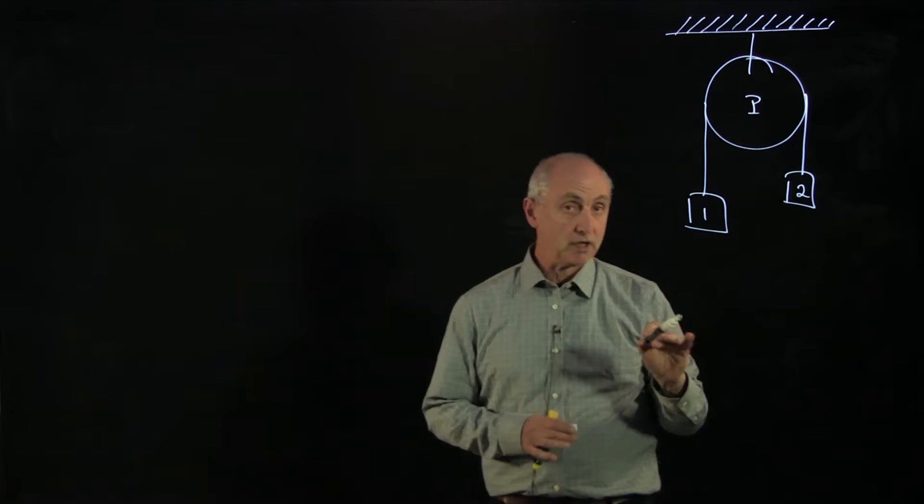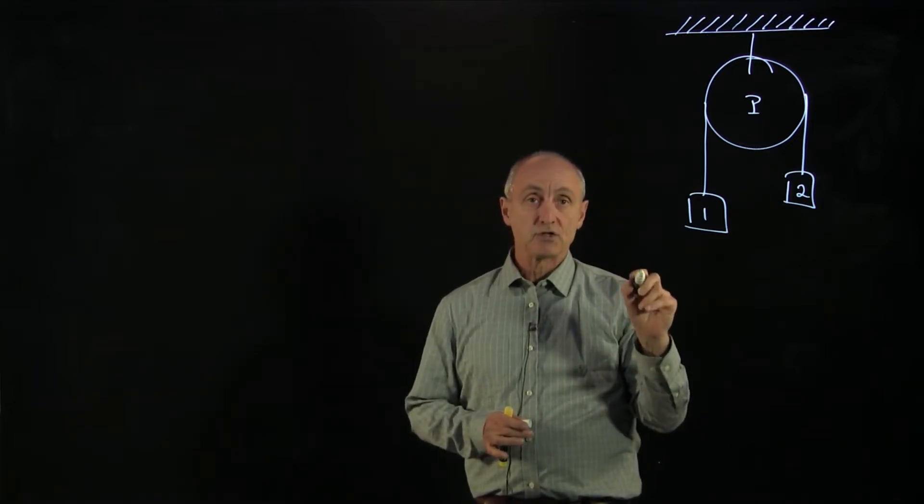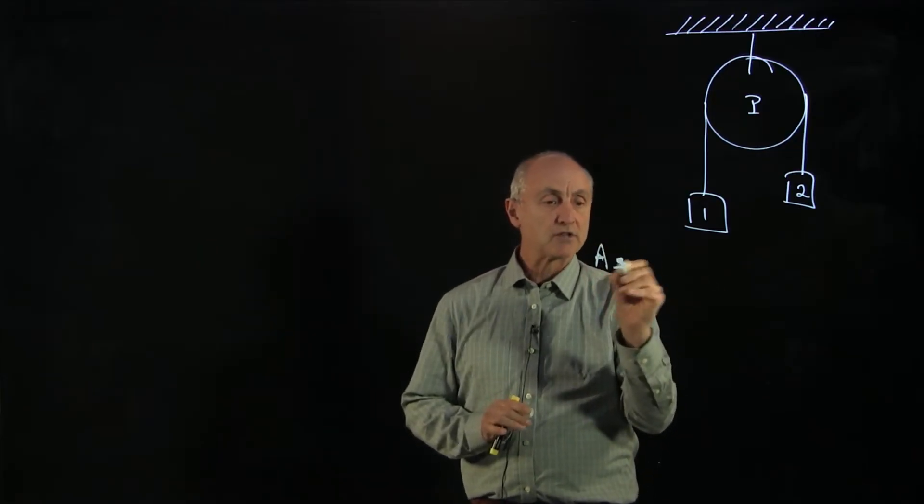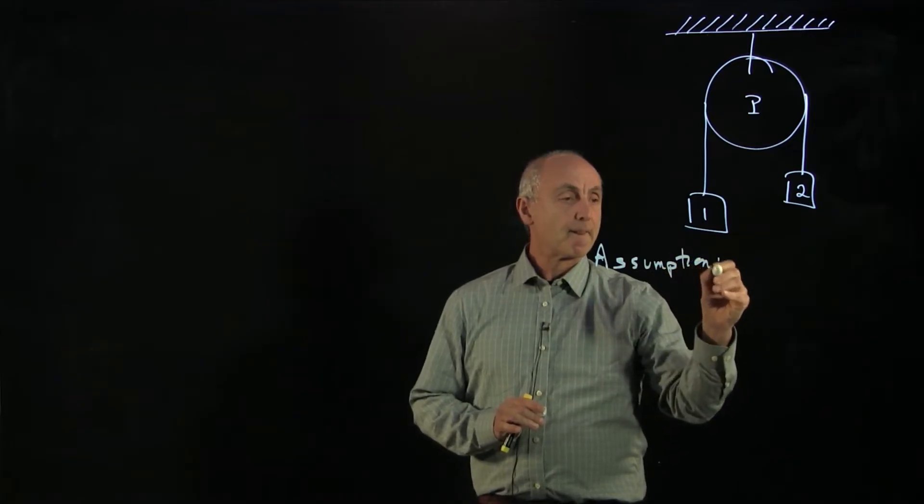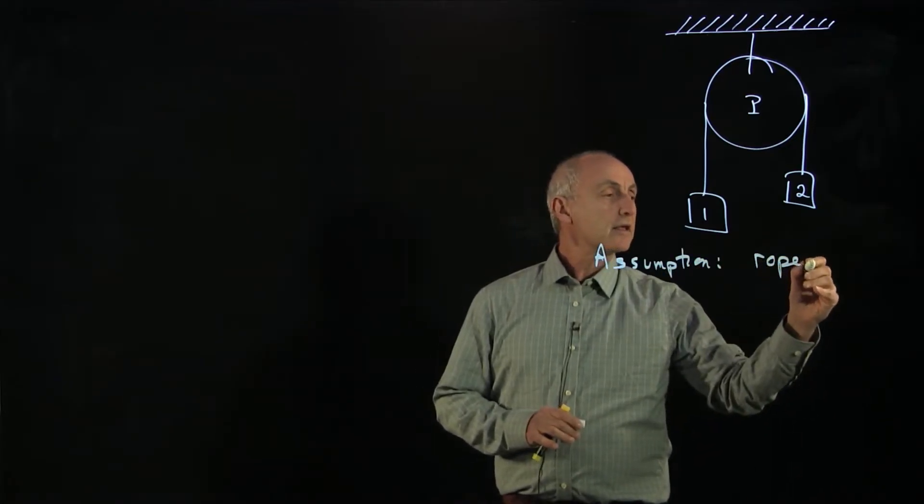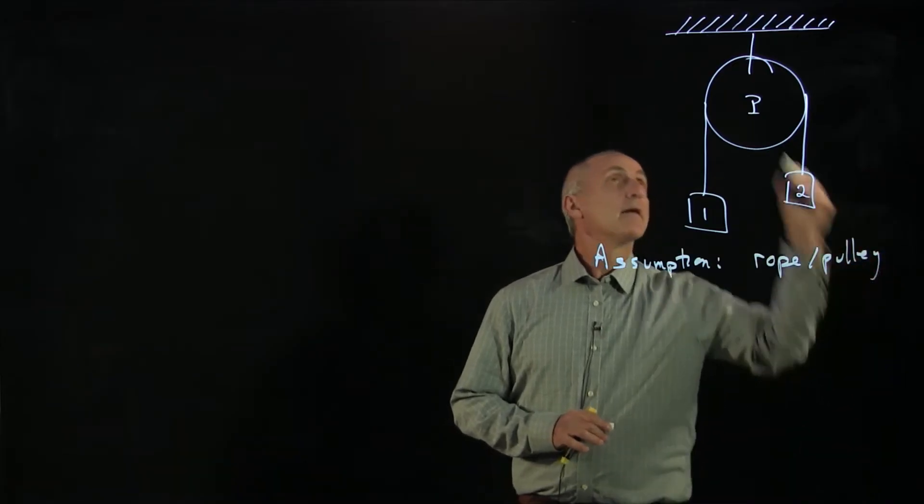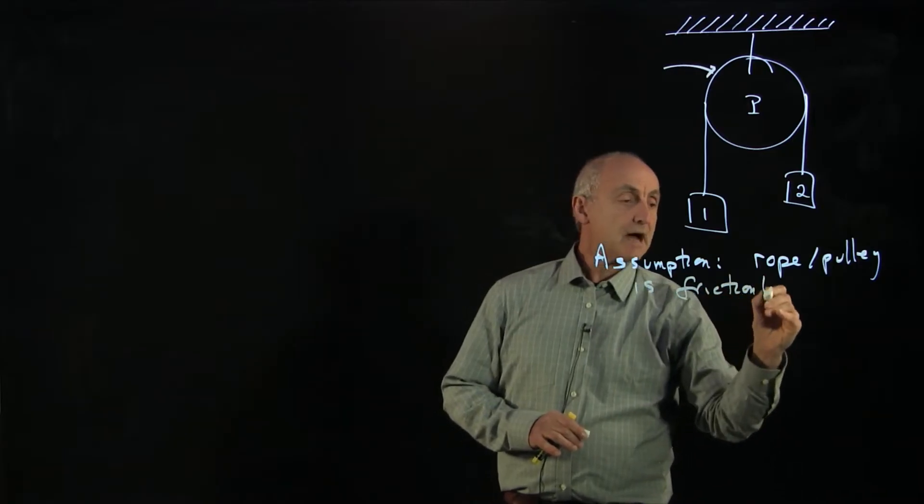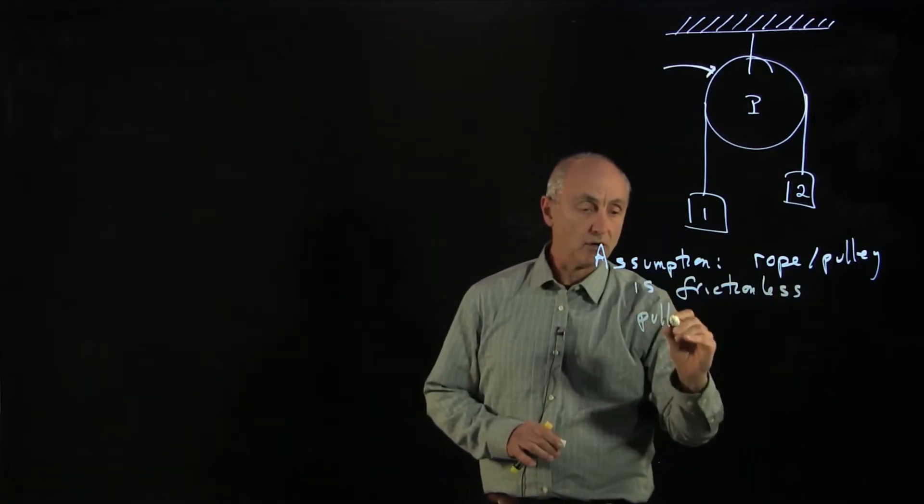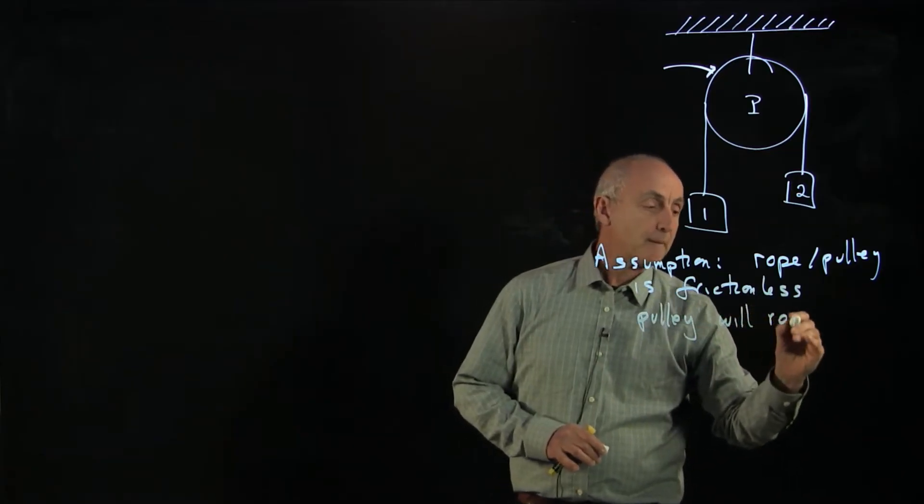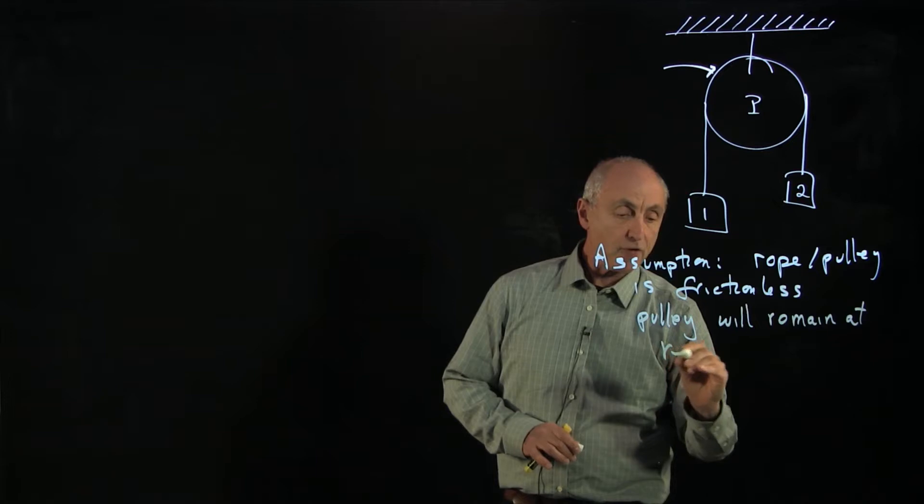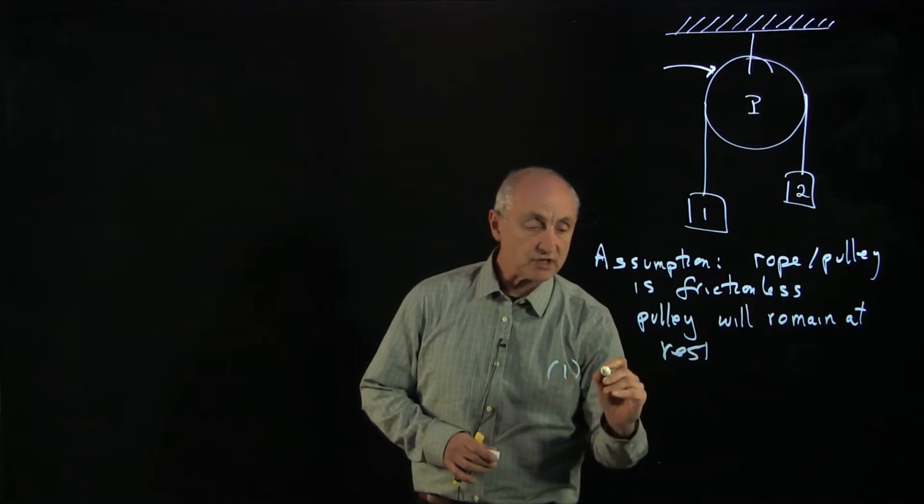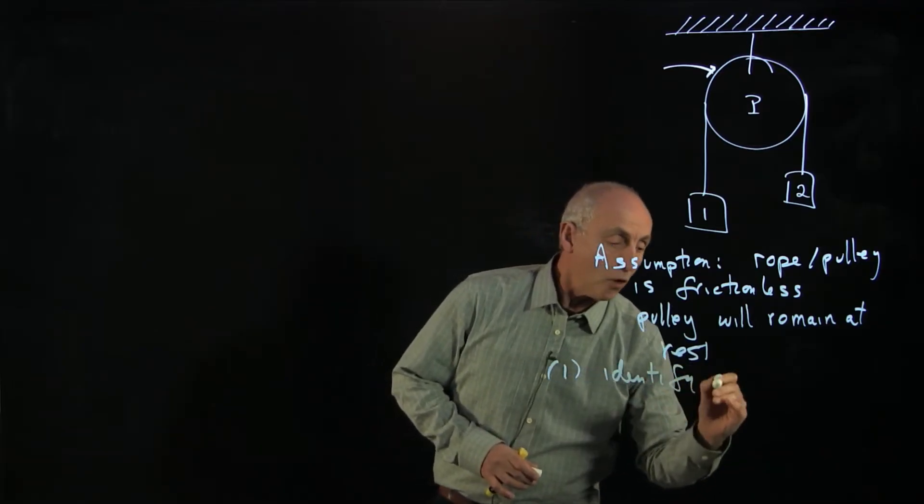Going back to our methodology, the first thing we want to ask ourselves is to identify what are all the moving pieces. So I'm going to make my first assumption here that the rope pulley surface is frictionless. What that assumption means is that the pulley will remain at rest. Therefore, when we want to break this problem down, our first question is to identify all the moving objects.